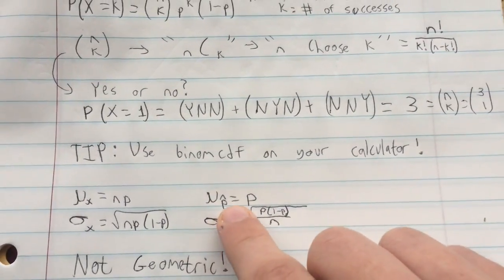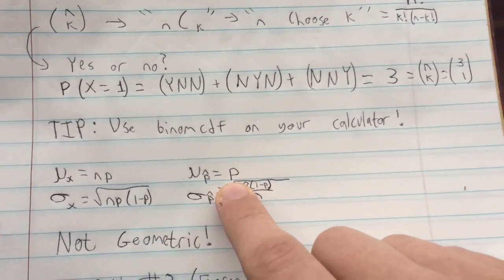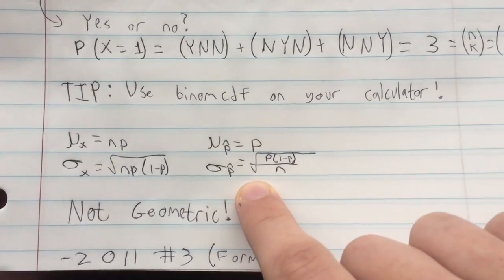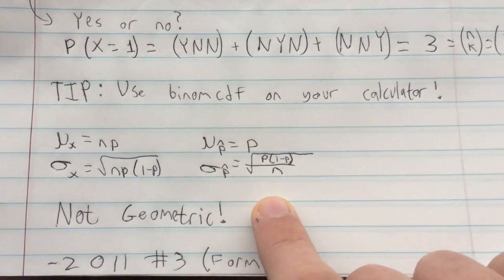for proportions, the proportion is going to be the actual probability of success, P. And the standard deviation, square root of P times 1 minus P over N.